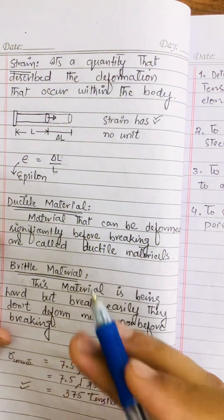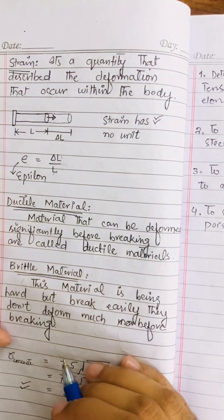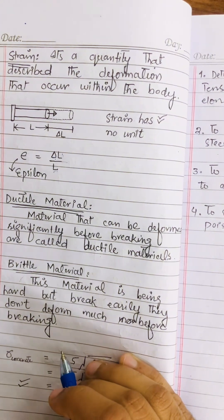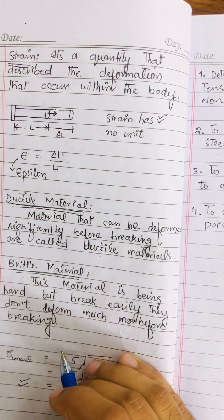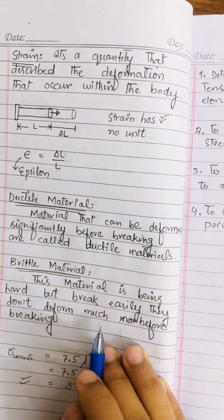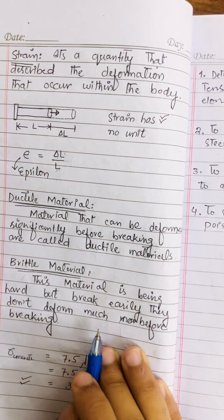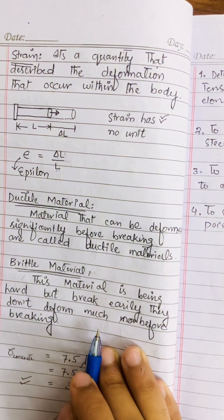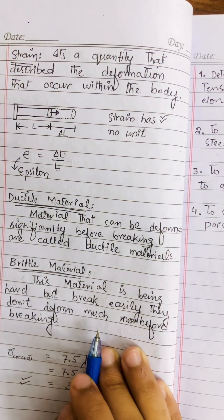A ductile material is one that can deform significantly before breaking — it deforms without breaking up to a certain limit. A brittle material is hard but breaks easily without much deformation. Brittle materials break when force exceeds their ultimate stress-strain limit.